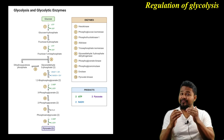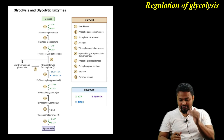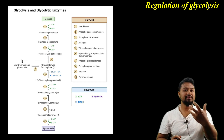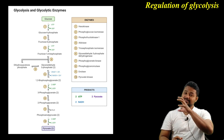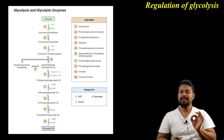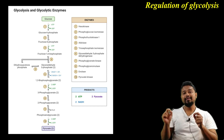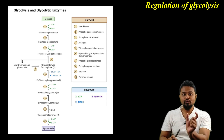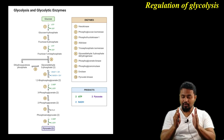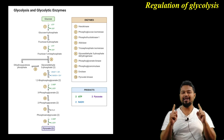This glycolysis process regulates the cell orbit. This glycolysis process is very important, because in this process, our living organisms — whether aerobic respiration or anaerobic respiration — our glycolysis process is common for both. This is a common process, and it regulates the cell orbit.